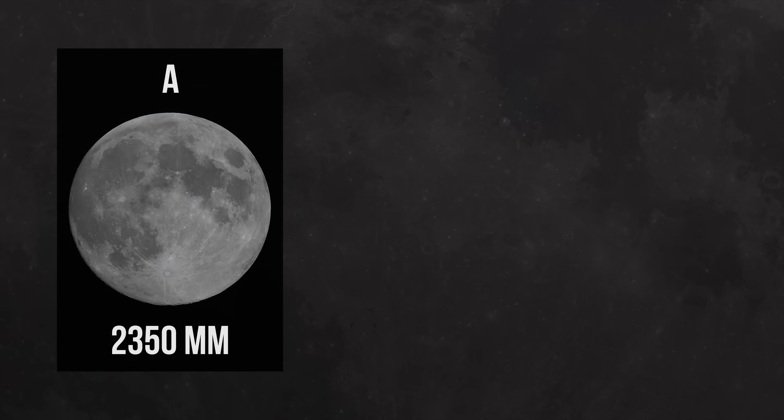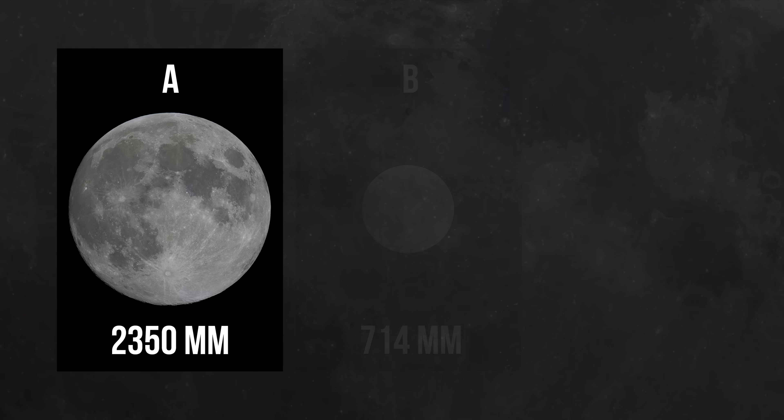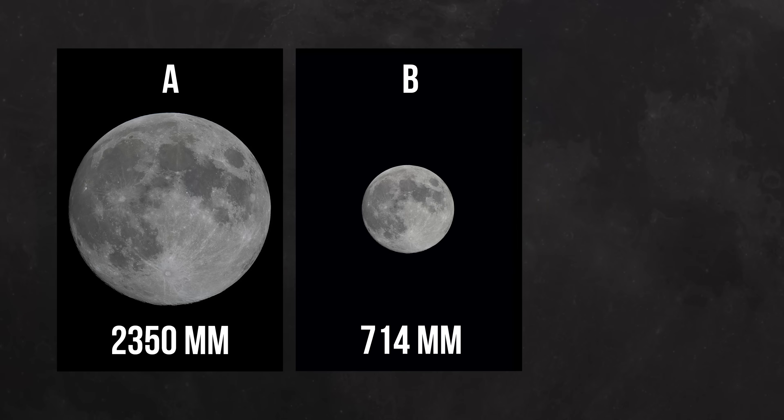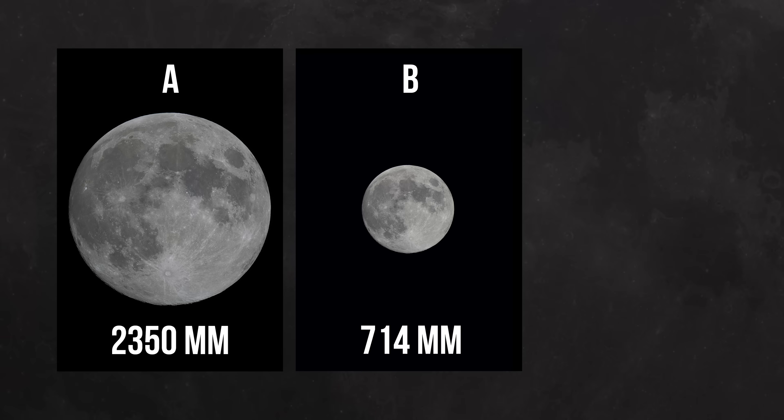Let's start with the largest telescope, the 2350mm setup. There's no surprise here — this one produced the largest moon image. And next is the medium-sized 740mm telescope. It gives us a significantly smaller moon image, and that's also expected, because shorter focal length means smaller image. Makes sense, right?